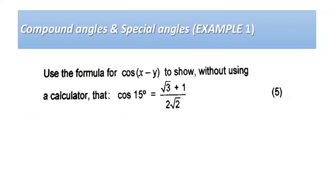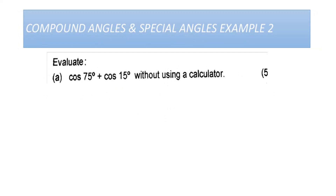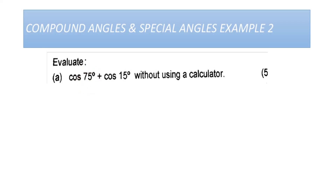I'm going to go through an example where I show you how we can expand or write out the cosine of 15 degrees as a compound angle using special angles, to prove that the left-hand side equals the right-hand side. I'll also go through an example where we evaluate cosine of 75 degrees plus cosine of 15 degrees by writing each out as a compound angle using special angles — to simplify without using a calculator.